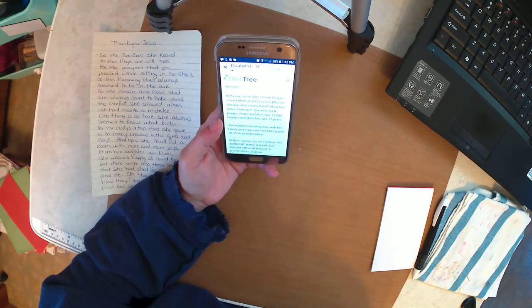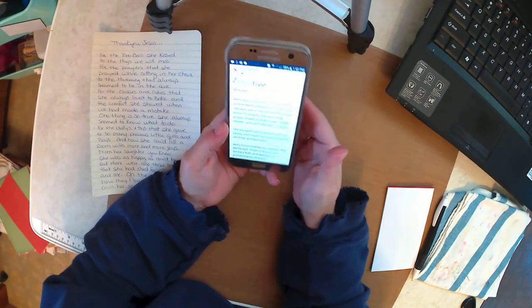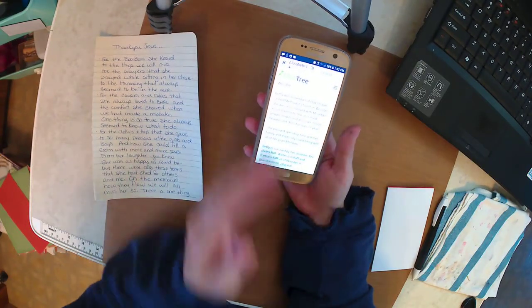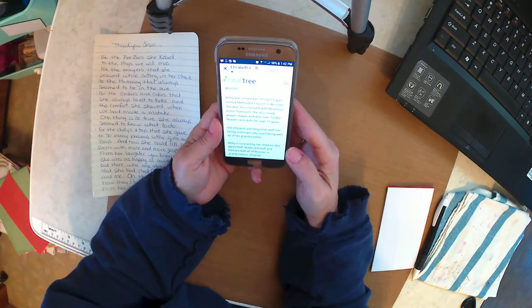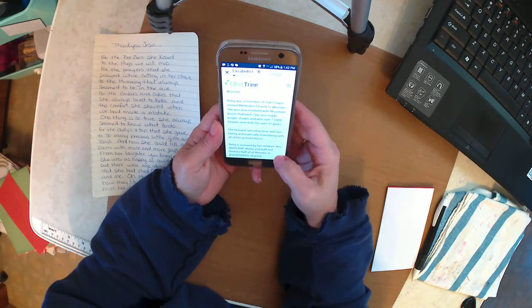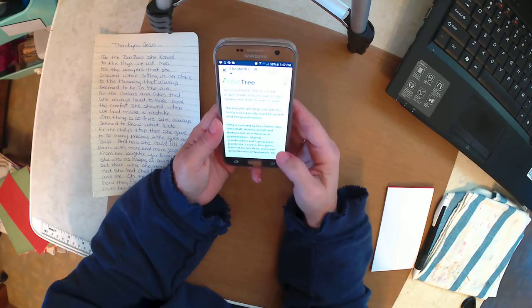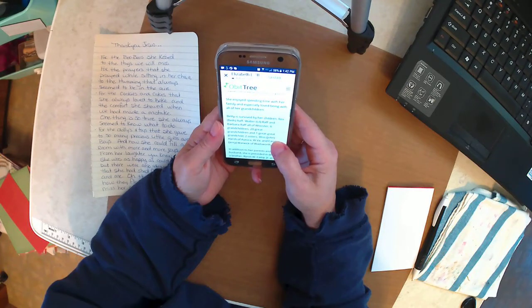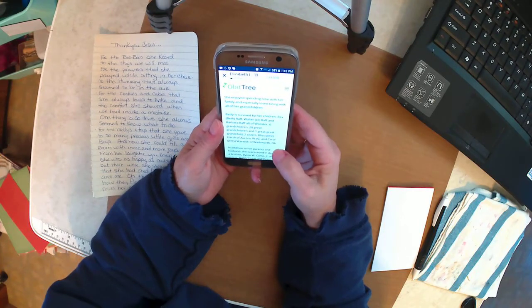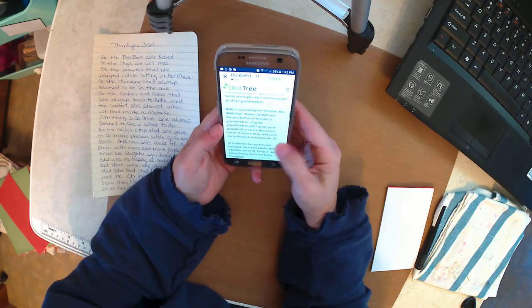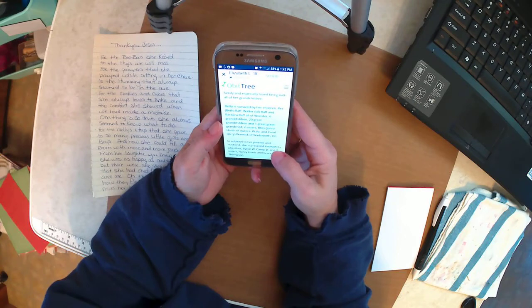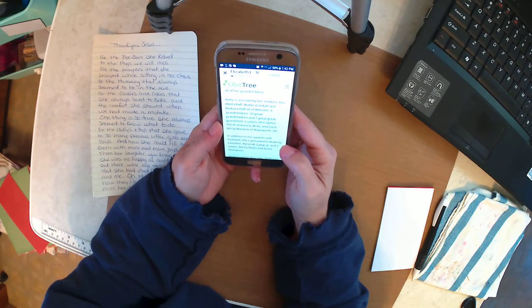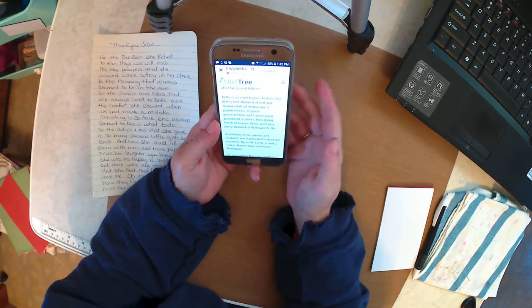She also sent out over 13,000 Heaven Sent dolls over the last 17 years. The Heaven Sent dolls was her ministry. In the poem that I wrote, that was the dollies and toys. I believe I'd shared that a long time ago, but if I can find the different articles at some point I can share those with you. She enjoyed spending time with her family and especially loved being with all of her grandchildren. She had three children - my father, my aunt, and uncle - and she had six grandchildren, 20 great-grandchildren, and one great-great-grandchild, which happens to be Murky, our grandson.